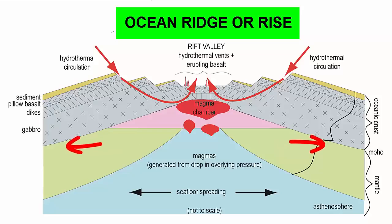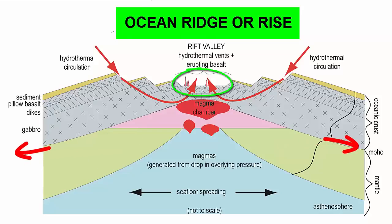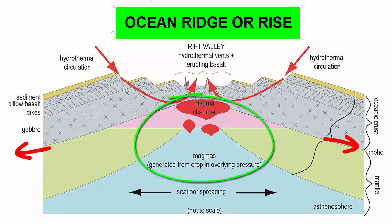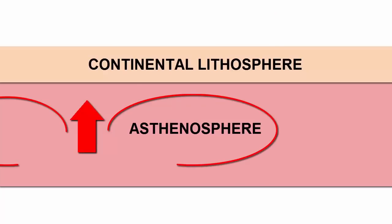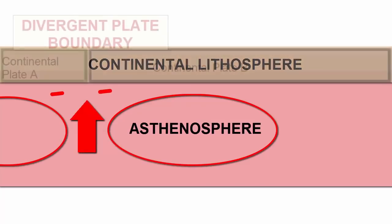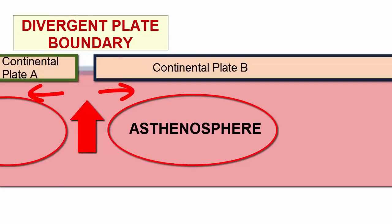As the plates separate, a rift valley forms atop the ridge. The drop in pressure on the underlying mantle rock causes it to melt, and now that it's lower density, the melted rock, or magma, rises to the surface and erupts along the center of the rift valley. When new convection cells form under a continent, divergence tears the continent apart.